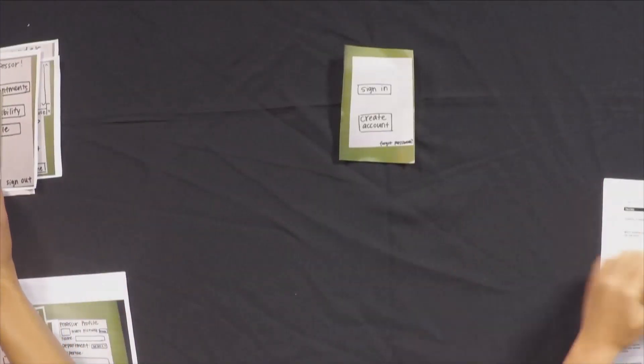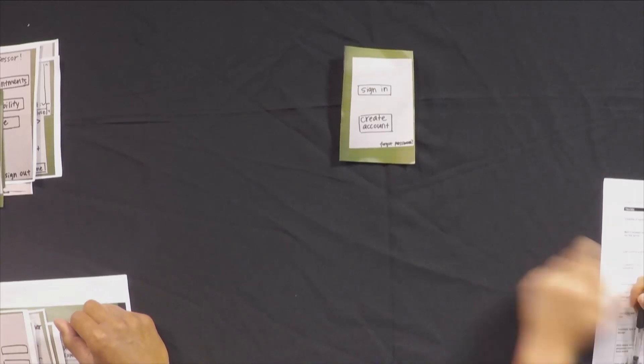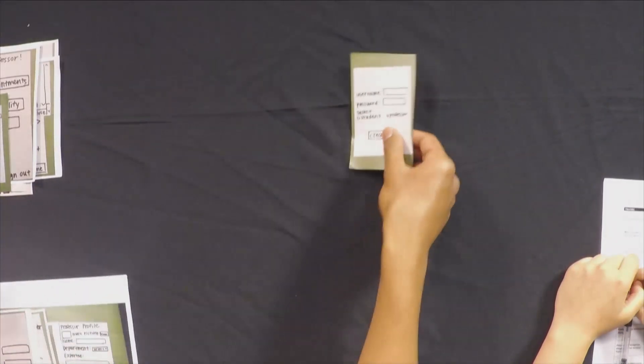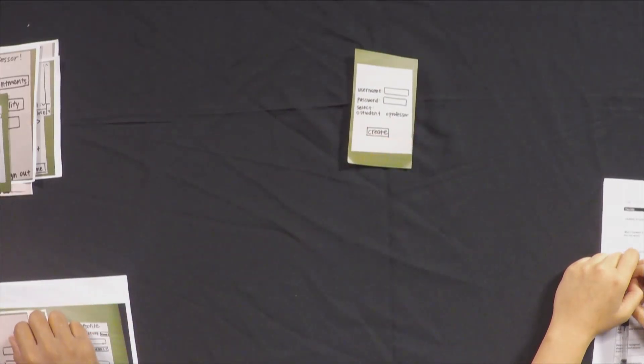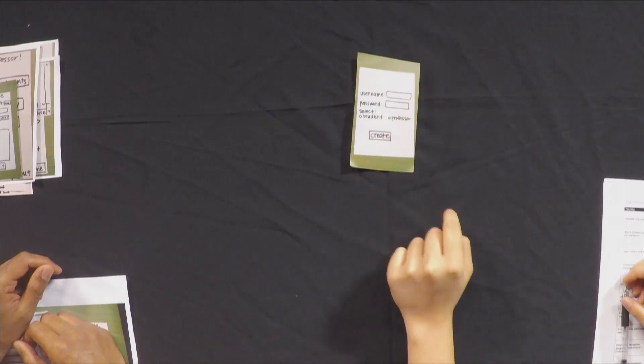So this is the first screen and I don't even know what prototype I'm testing because there's no name on it. So I'll just create an account. Here I'm gonna make a username and password. I'm gonna pretend to be a professor and click create.